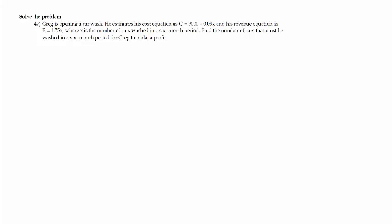Number 47. Greg is opening a car wash. He estimates cost equation as c equals 9,000 plus 0.09x, and his revenue equation as r equals 1.75x, where x is the number of cars washed in a six-month period. Find the number of cars that must be washed in a six-month period for Greg to make a profit. So the cost is given by c of x, the revenue equation is given by r, and x is going to be the number of cars washed in six months.